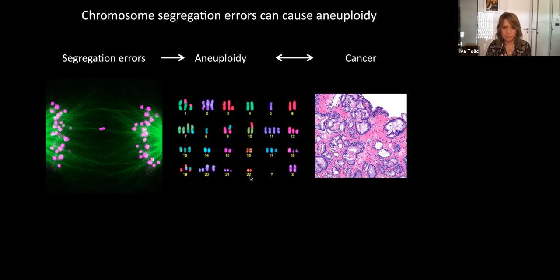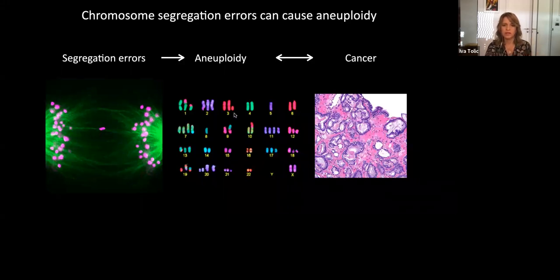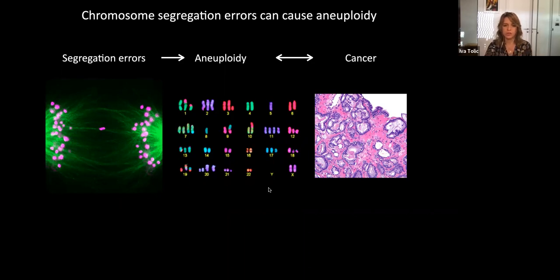Aneuploid karyotypes look like this: in a human cell we should have two copies of each chromosome, but this is a cell that had many errors over many generations — it has, for example, three copies of chromosome two. This is what we mean by aneuploidy: when a cell has the wrong number of chromosomes. This is very common in many types of cancer and is also thought to contribute to the appearance of cancer, though the interplay between aneuploidy and cancer is not very well understood.